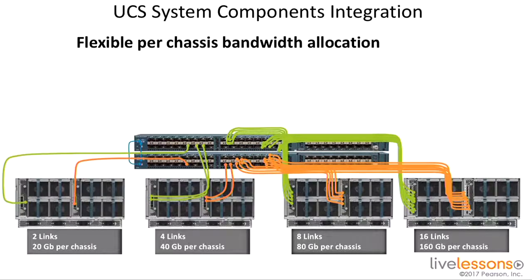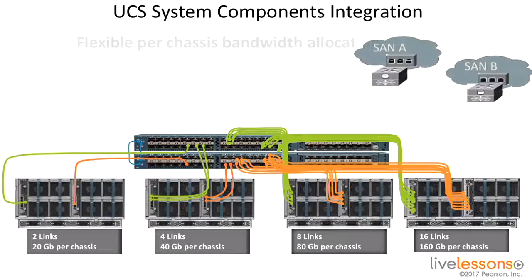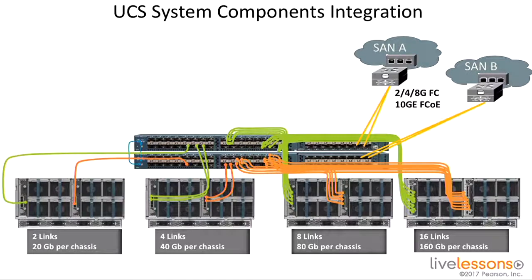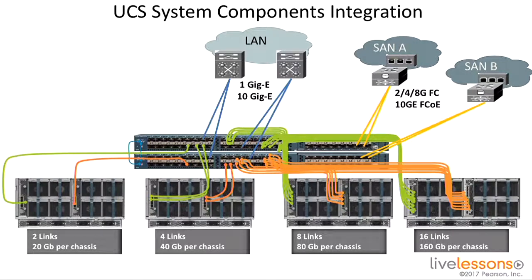If I'm running a cable from the left I/O module on the chassis to the top Fabric Interconnect and the one on the right to the bottom Fabric Interconnect, I'm going to want to do the same thing on every chassis I cable up. When connecting storage to my UCS system, it's very easy — I can plug in either Fiber Channel or FCoE cables into my Fabric Interconnects and run a storage port between the Fabric Interconnects and the storage area network. The same thing goes with the local area network or the data center LAN, based on the type and amount of bandwidth I need.